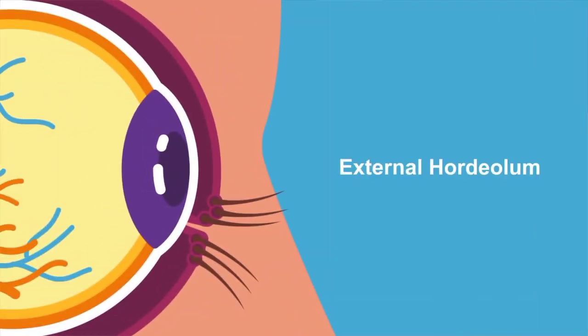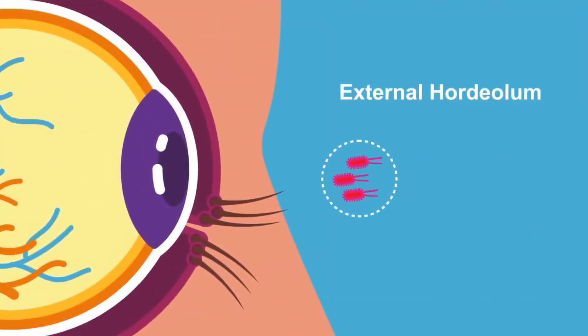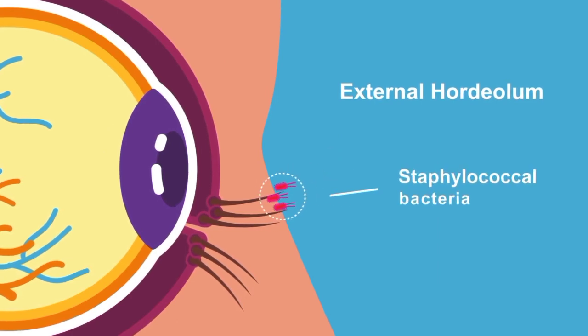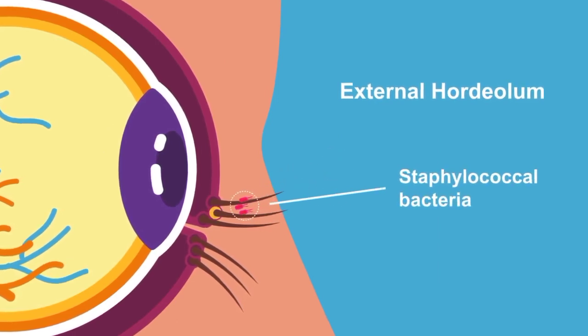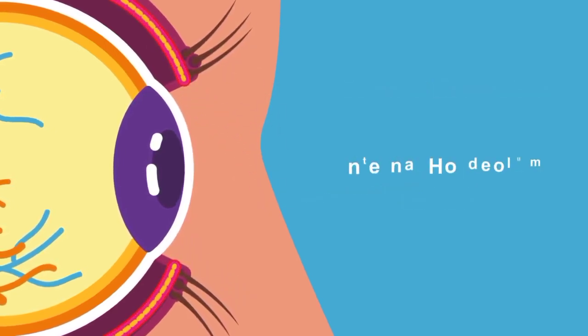Stye, or external hordeolum, is an acute infection, usually from staphylococcal bacteria, of the lash follicle and the associated glands of Zeiss. The same infection occurring in meibomian glands is called internal hordeolum.